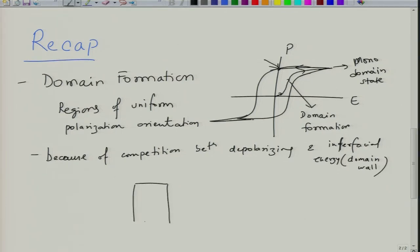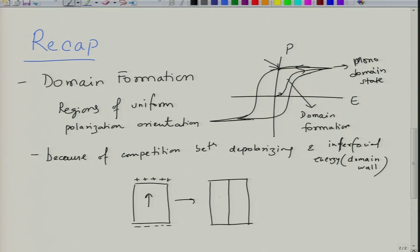Suppose you have a dielectric in a mono-domain state - you will have dipoles aligned in one direction giving huge surface charge density. If you create a 180-degree domain, you reduce the surface charge density and the charges nullify each other, but at the same time you create a domain wall. This is a single domain.